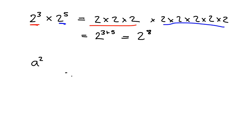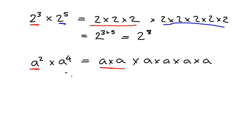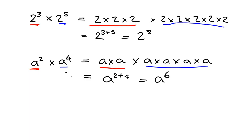Let's look at another example. If we had a squared multiplied by a to the power of 4, what does that mean? Well, a squared is just a times a — there is your a squared. And a to the 4 means 4 of those a's all multiplied together. To write it as a single power, we need to count how many a's we have. We had 2 of them here and another 4 over here, so in total we have 2 plus 4, which is 6 a's all being multiplied together.